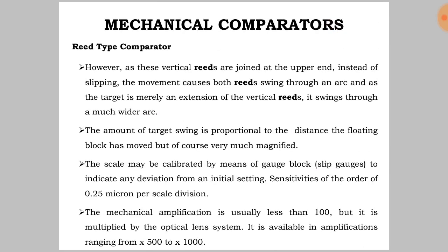However, as these vertical reeds are joined at the upper end, instead of slipping, the movement causes both reeds to swing through an arc. Since the target is merely an extension of the vertical reeds, it swings through a much wider arc. The amount of target swing is proportional to the distance the floating block has moved, but of course very much magnified. The scale may be calibrated by means of a gauge block to indicate any deviation from an initial setting.